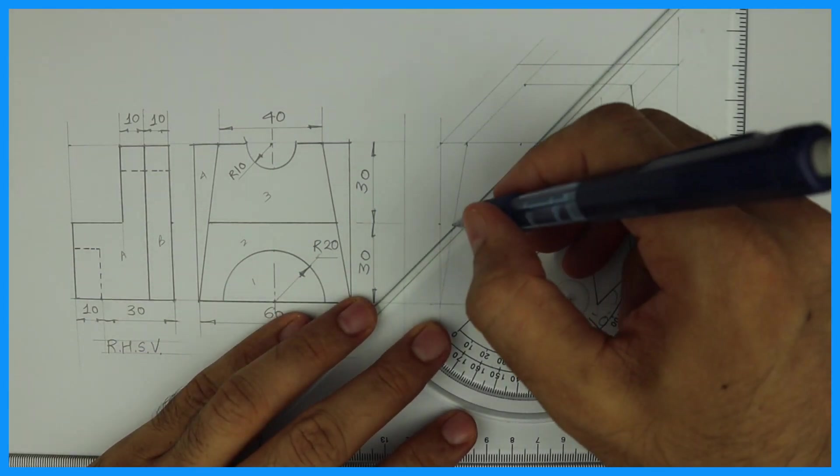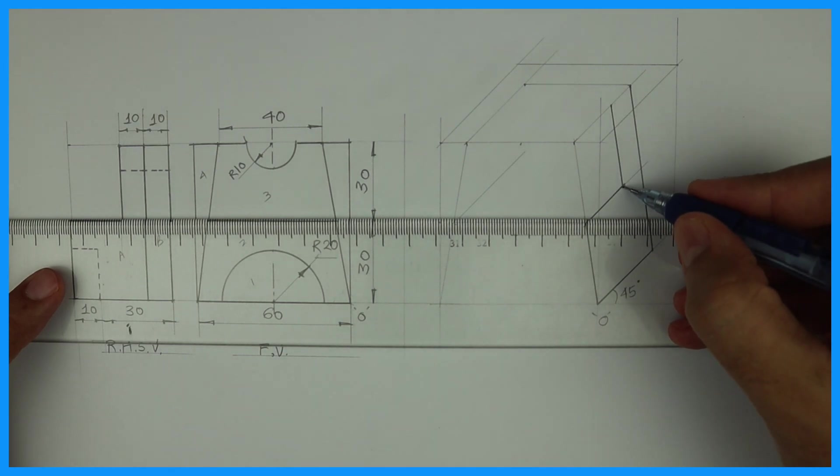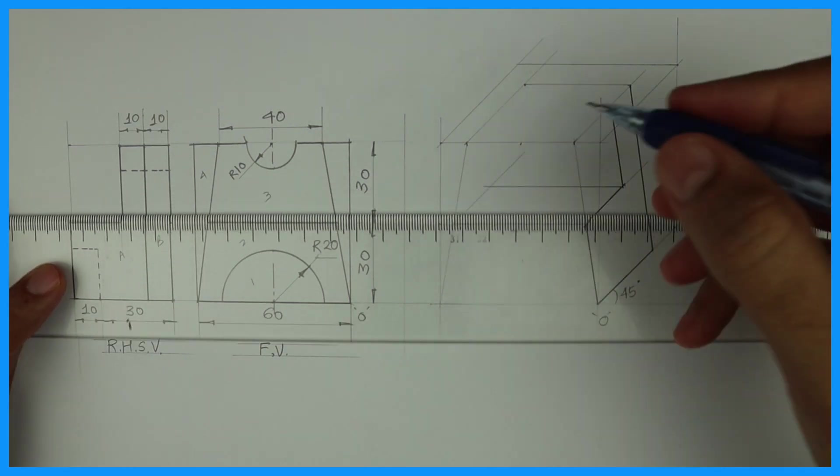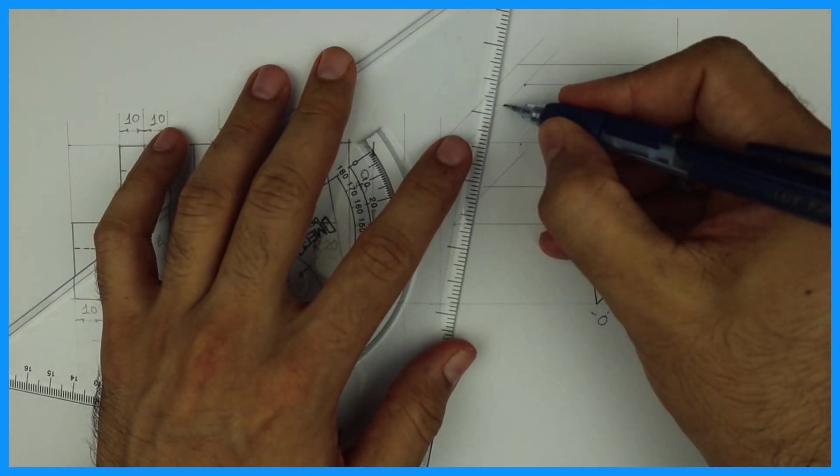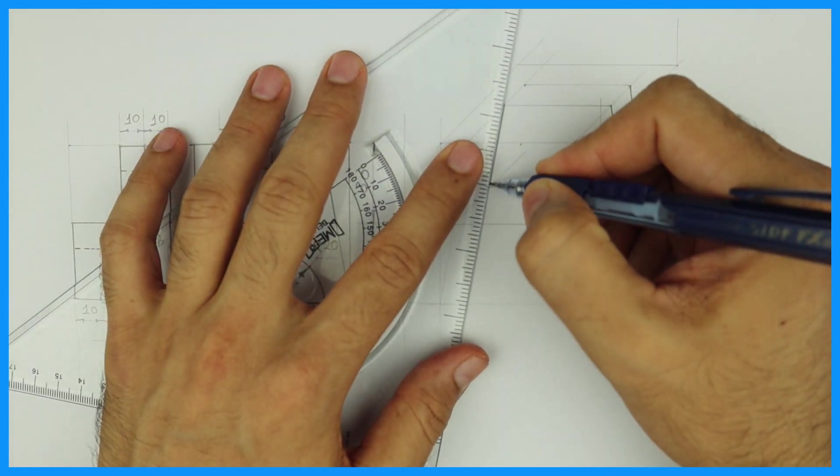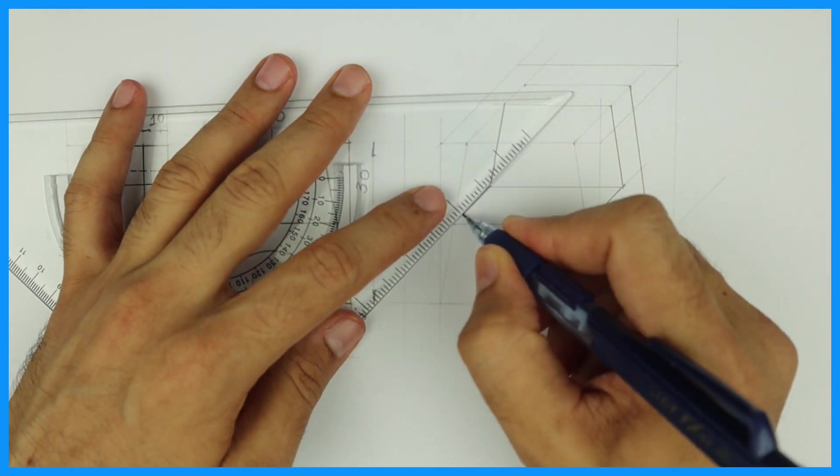This part. Now we will extend this. And we will draw horizontal line from here. From here also horizontal line. See this. So, this is what we got.